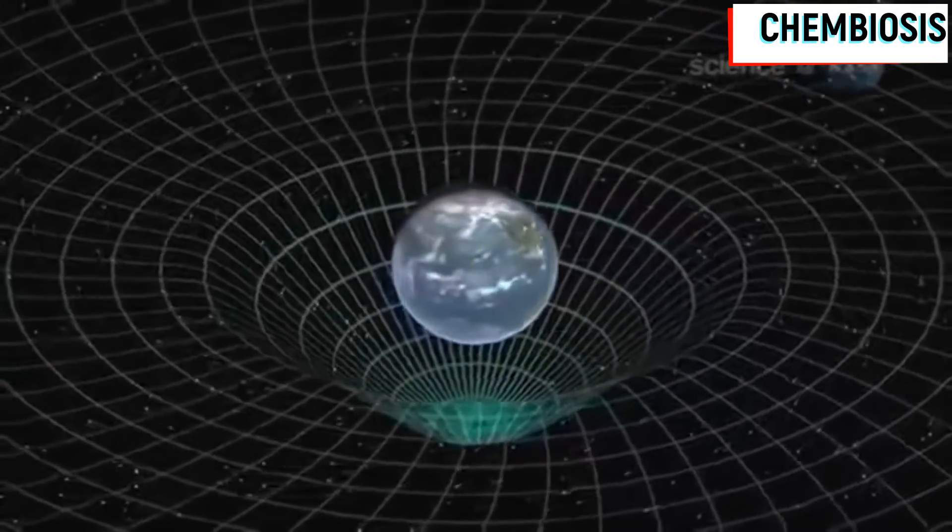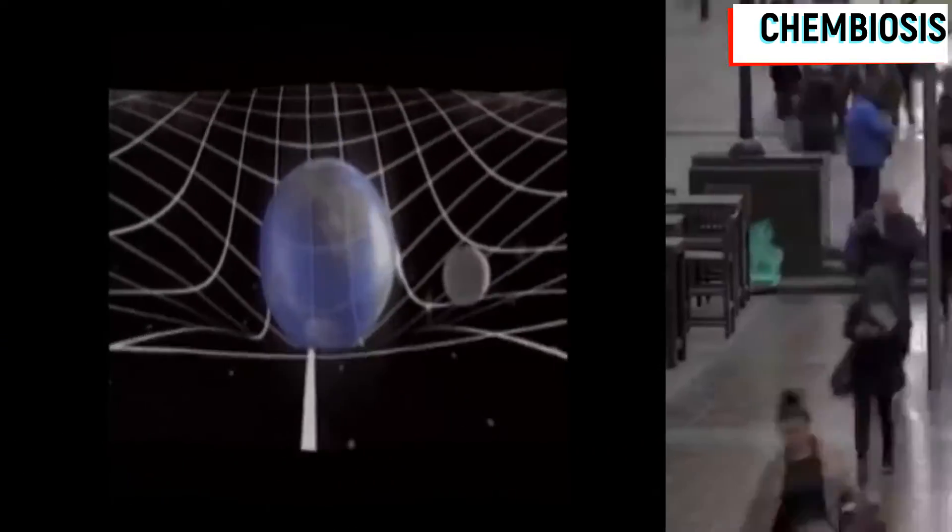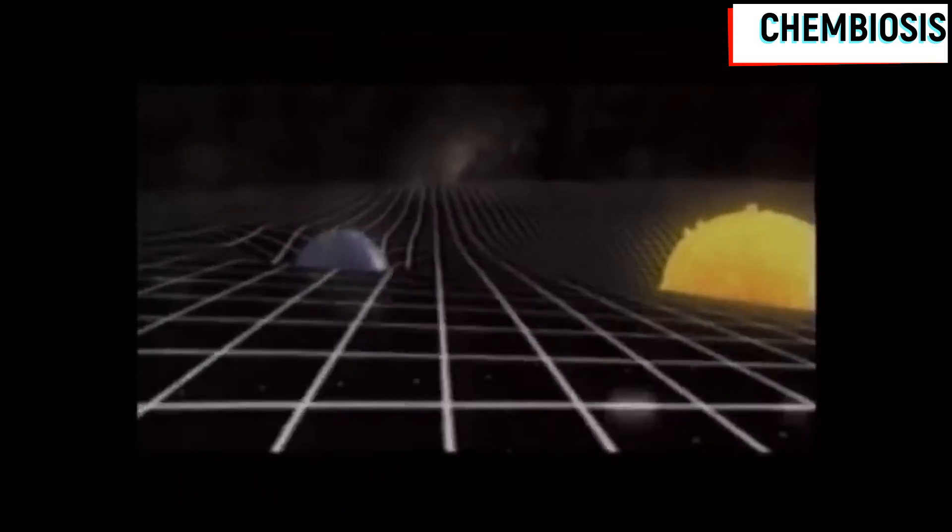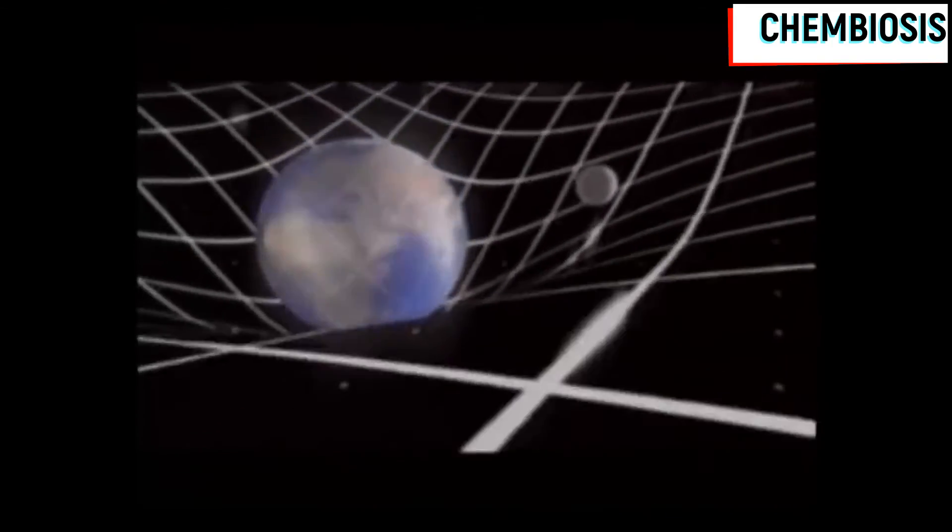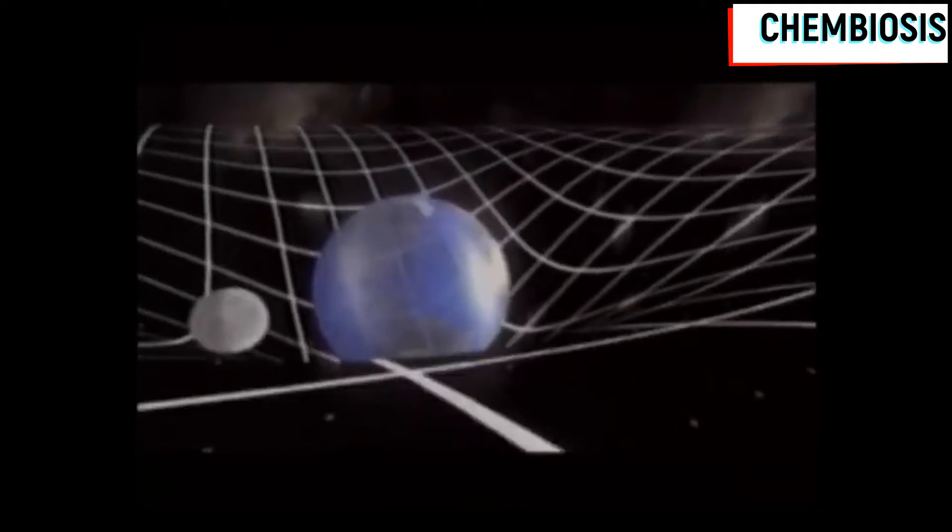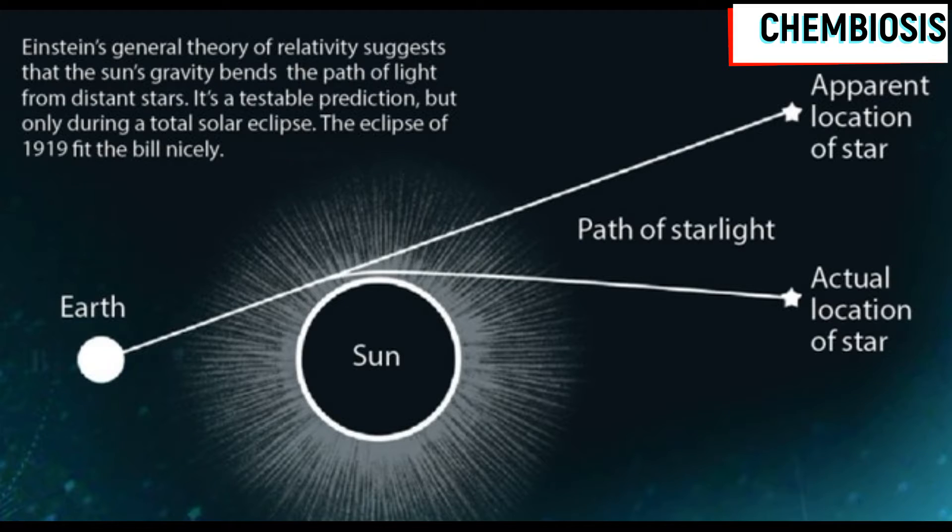Similarly, the mass of Earth creates a curvature in the space-time fabric due to which the moon is revolving around the Earth. So overall, we can see that the Sun creates curvature in space-time due to which Earth rotates around the Sun, and similarly, Earth also creates curvature in the space-time fabric around it due to which the moon rotates around the Earth. This theory of Einstein has been proved by observing some astronomical events in the year 1919, and the experimental data justified Einstein's predictions very well.